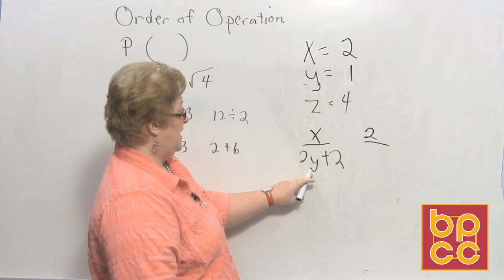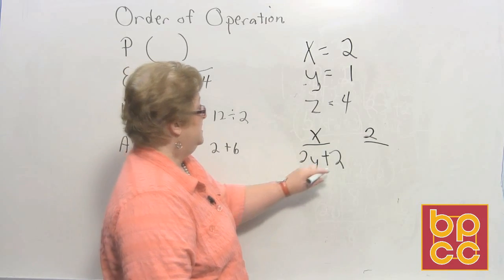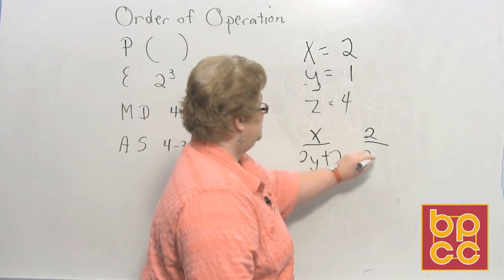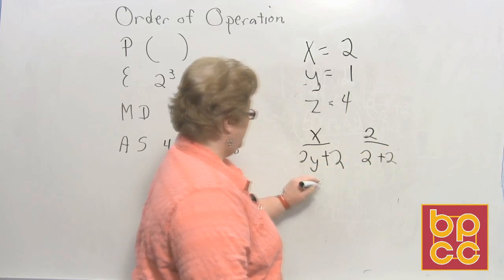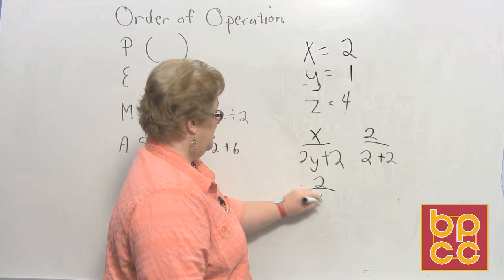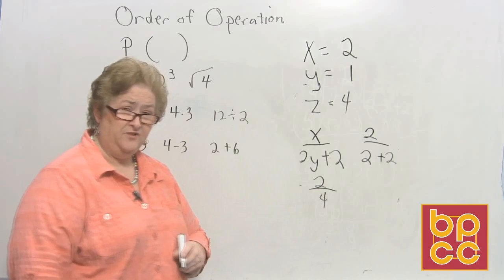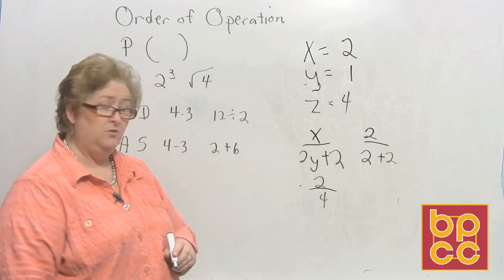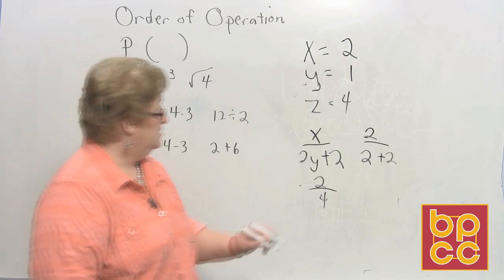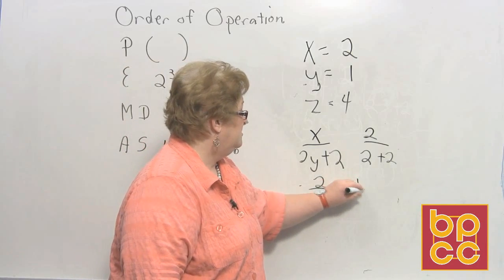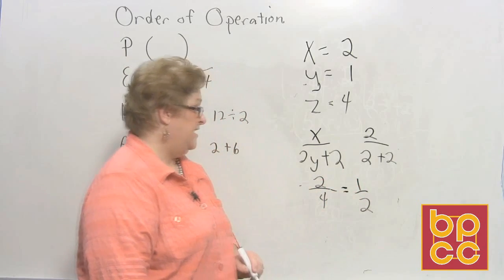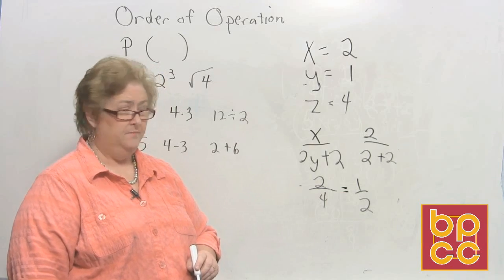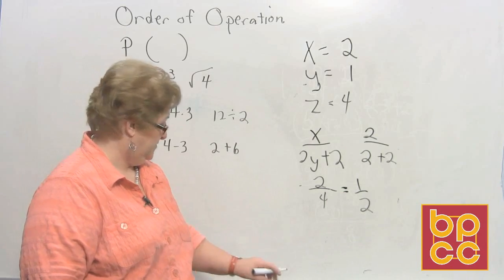2 times 1 is 2. And 2 plus 2. So now we have 2 over 4. We could leave it that way. But most of the time, you're going to want to reduce. And you know that 2 will go into both 2 and 4. So 2 fourths is equal to 1 half. And you have just evaluated my problem for me by subbing in those values. Okay. I think we shall try another one using those same values.